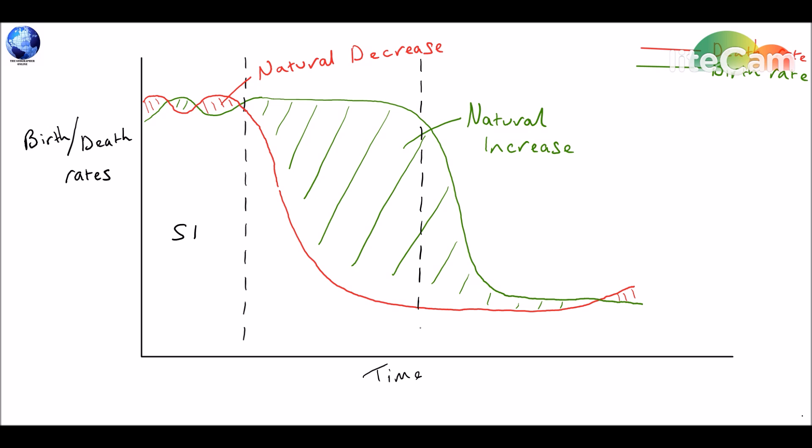Stage two, on the other hand, only begins when death rate rapidly begins to fall, due maybe because of various types of medical improvements or improvements in people's living standards or things like that.